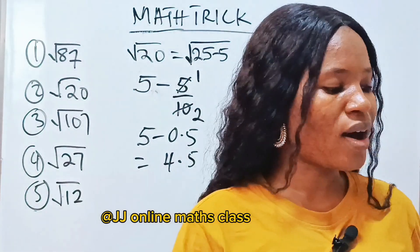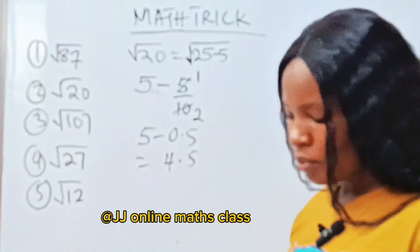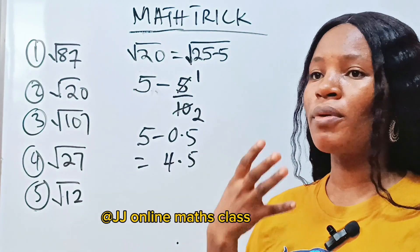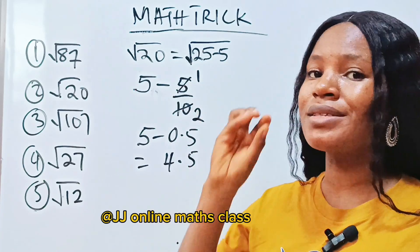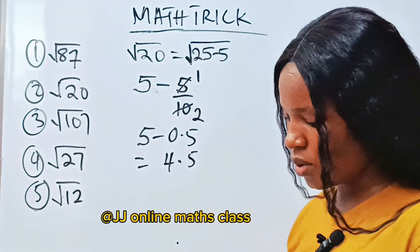Now let's place our calculator and see the exact value of square root of 20. Because this particular trick will not give you the exact value, but it will give you a 90% accurate... That is the accuracy is up to 90%.